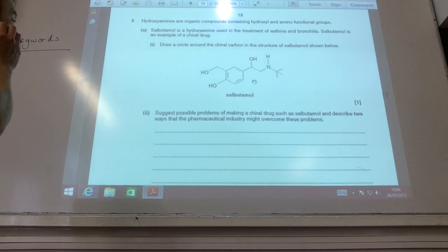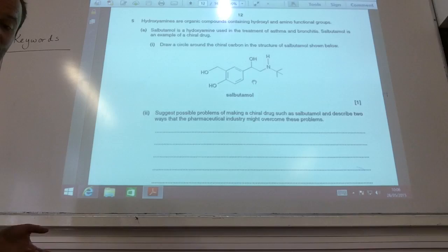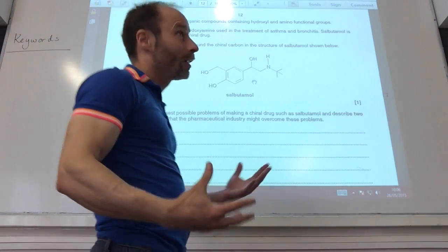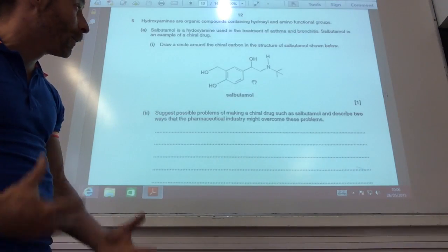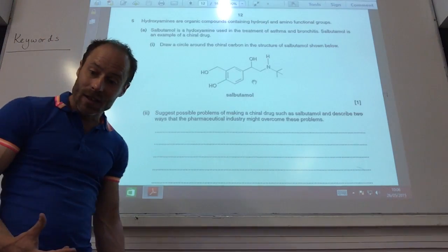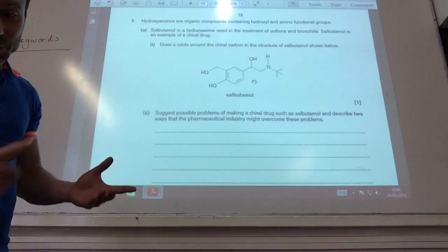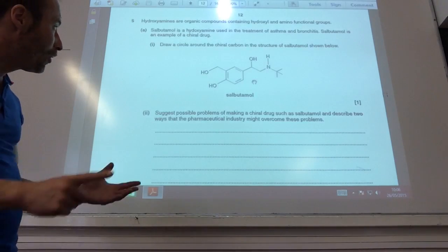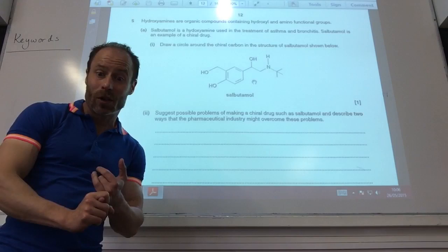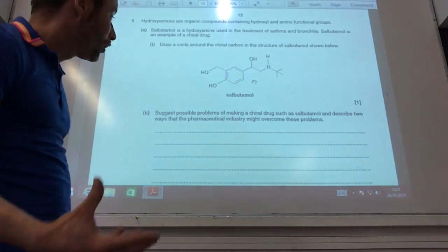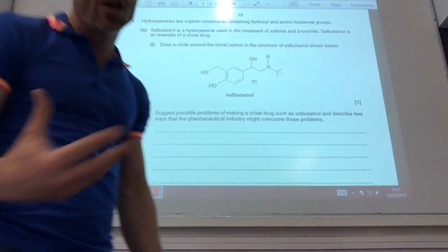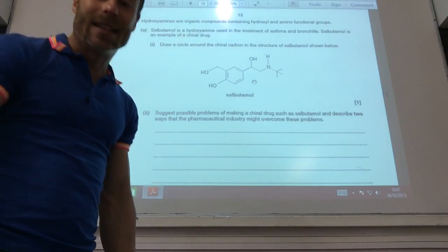Right, our old favorite then. Suggest possible problems of making a type of drug and two ways that we may overcome it. We've done this loads of times. Separation of the different optical isomers is extremely difficult and very expensive, and also one of the optical isomers may have very nasty side effects, which is a bad thing. So those are my two problems. How can I get around it? I can start with naturally occurring molecules with a chiral center as my starting point, and I can also use enzymes as well to make sure that only one of the optical isomers is actually made.